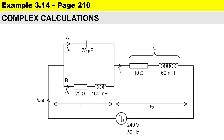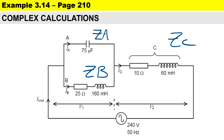This is the circuit we'll be working with. In branch A we have a capacitor of 70 microfarad and no resistor. In branch B we have a coil with a resistance of 25 ohms and an inductor of 160 millihenry. Branch C is a coil with a resistance of 10 ohms and an inductor of 60 millihenry.